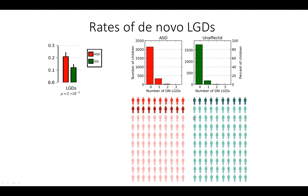If you take 100 kids with autism and 100 kids without autism, about 10 of the unaffected kids carry de novo LGDs. At the same time, about 20 autistic kids carry de novo LGDs. Of those 20, 10 would have de novo LGDs that are equally non-causal — equally irrelevant to autism — as those in unaffected kids. But there are 10 more kids where de novo mutations likely contributed to their autism. From these rates, we can estimate that about 10% of kids with autism in the Simons Simplex Collection have autism due to a de novo LGD.